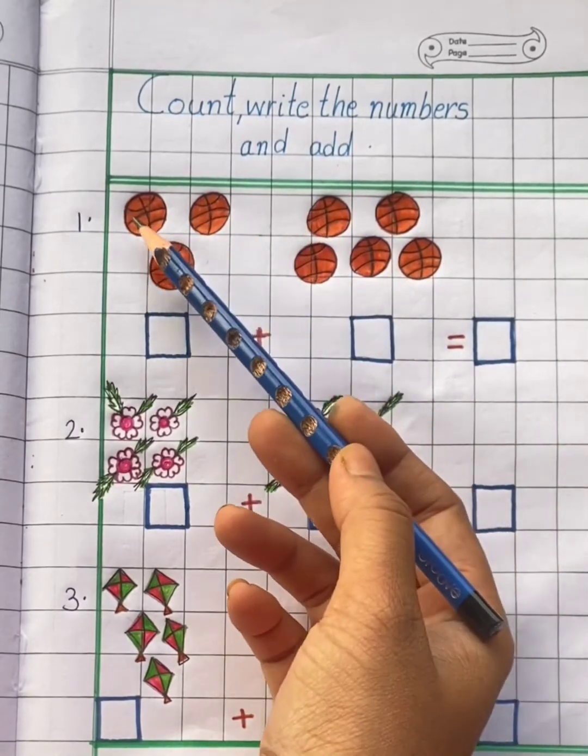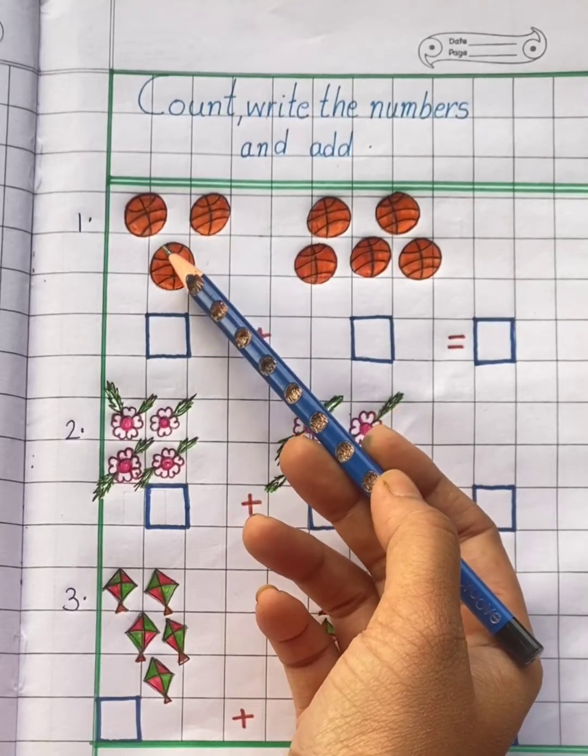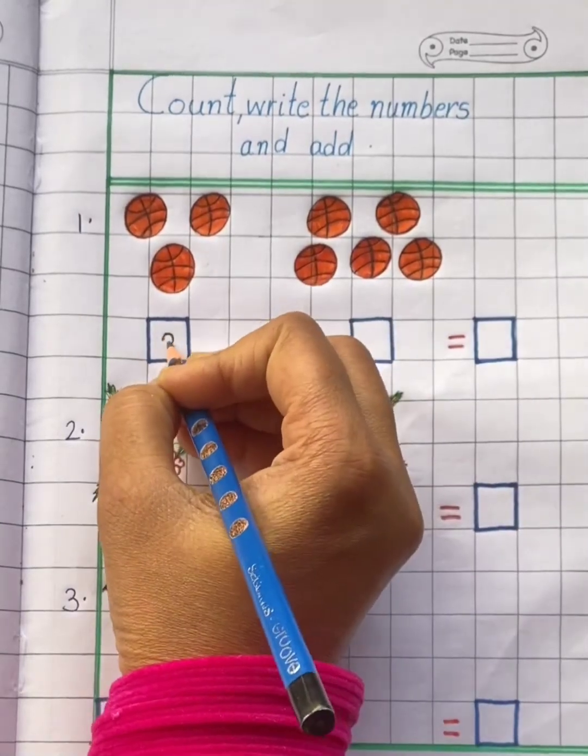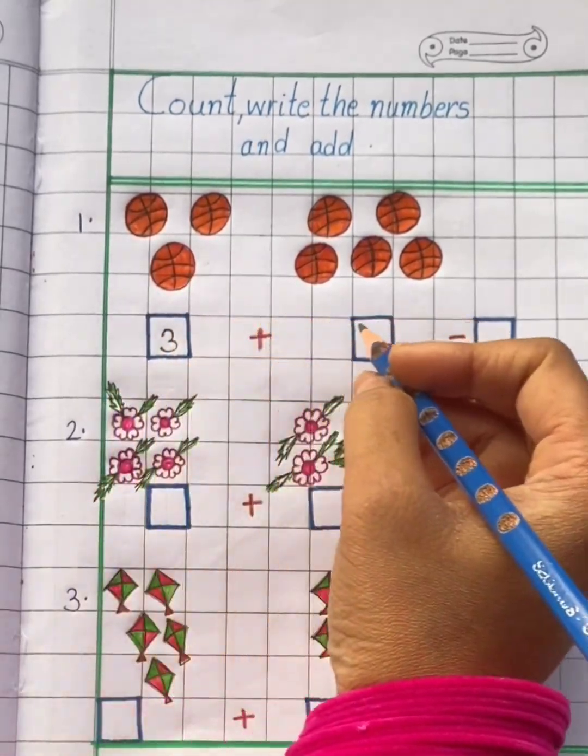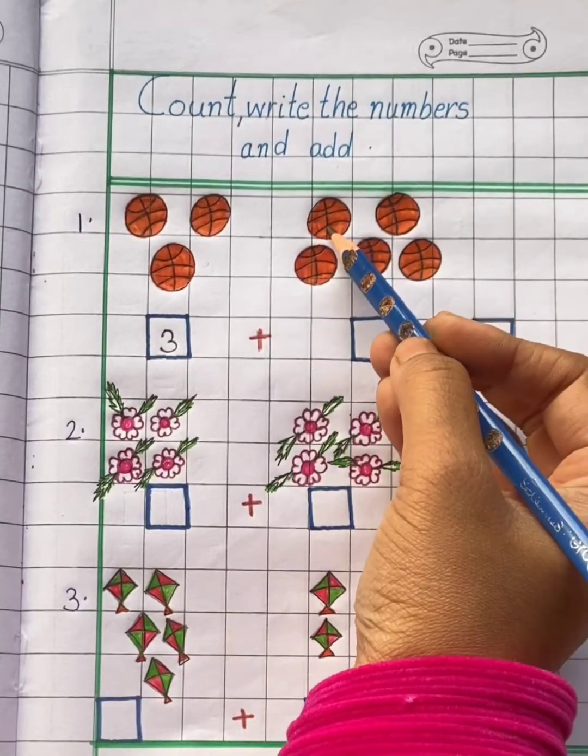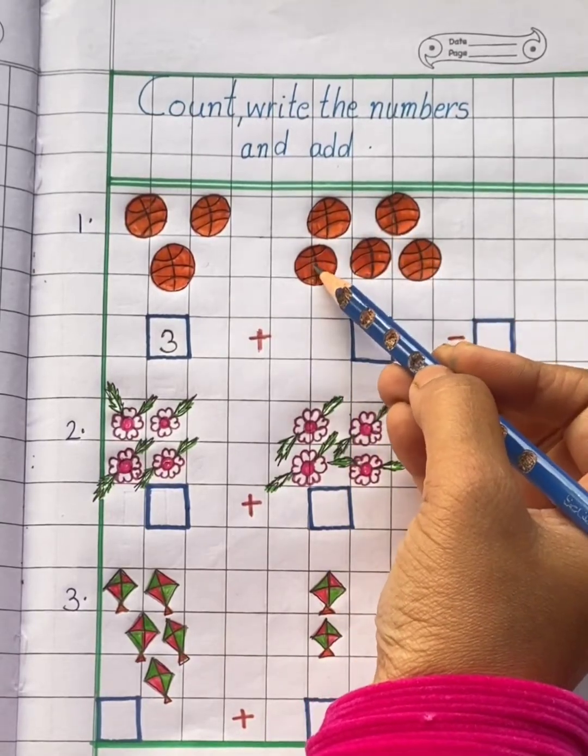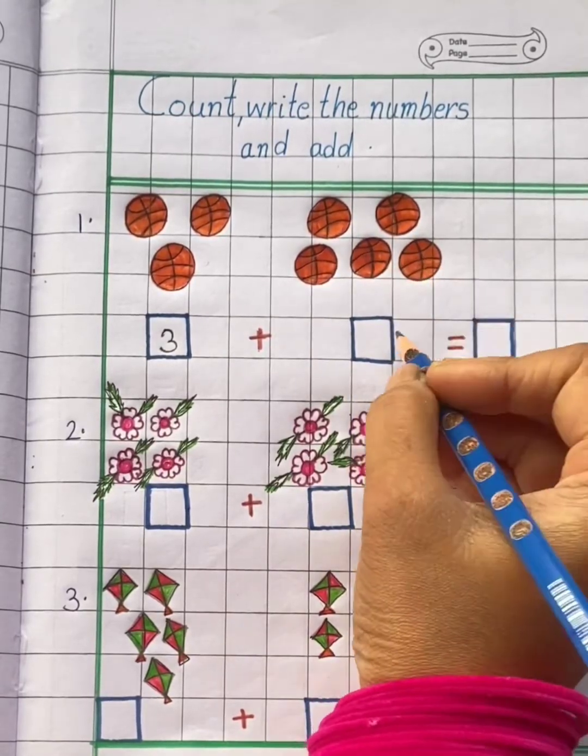Here we have 1, 2, 3. 3 balls. And here we have 1, 2, 3, 4, 5. 5 balls.